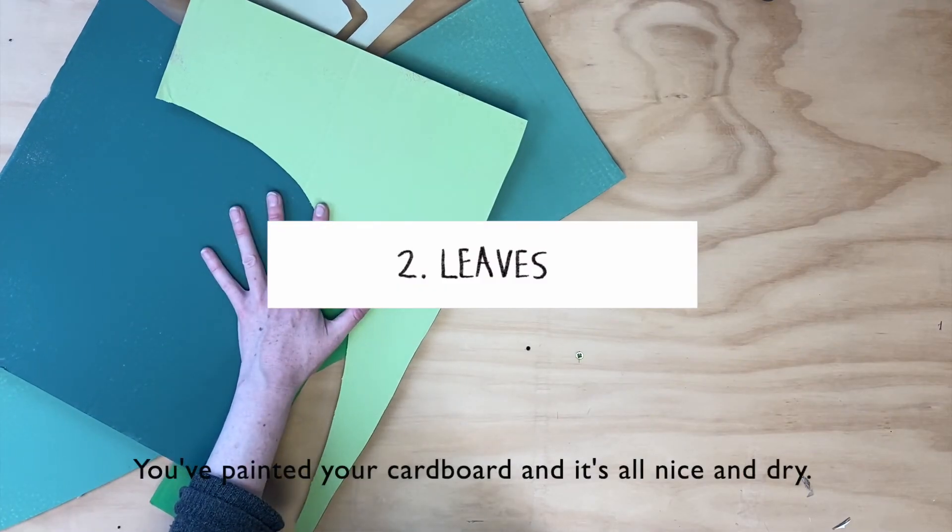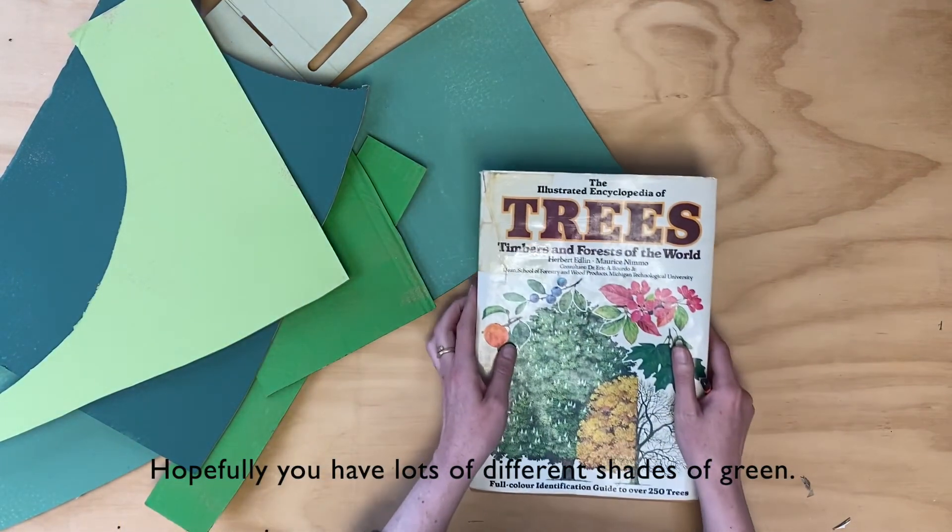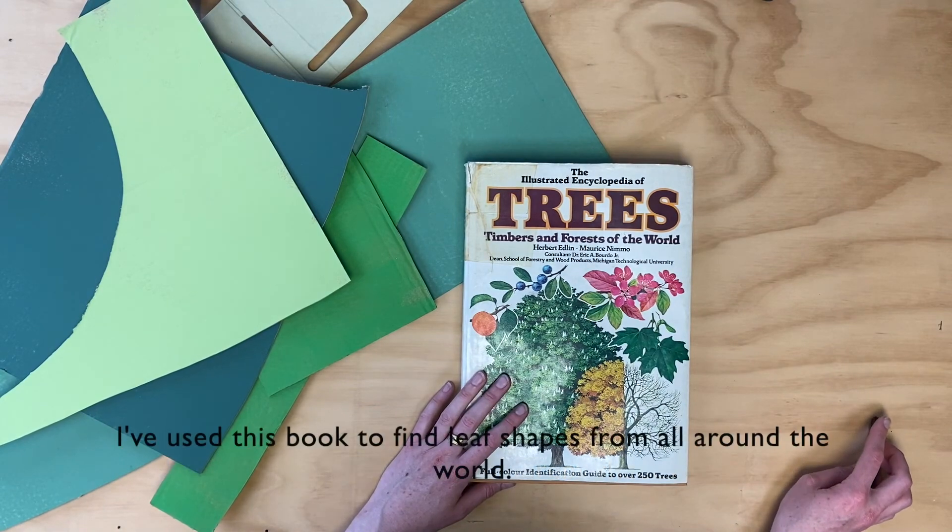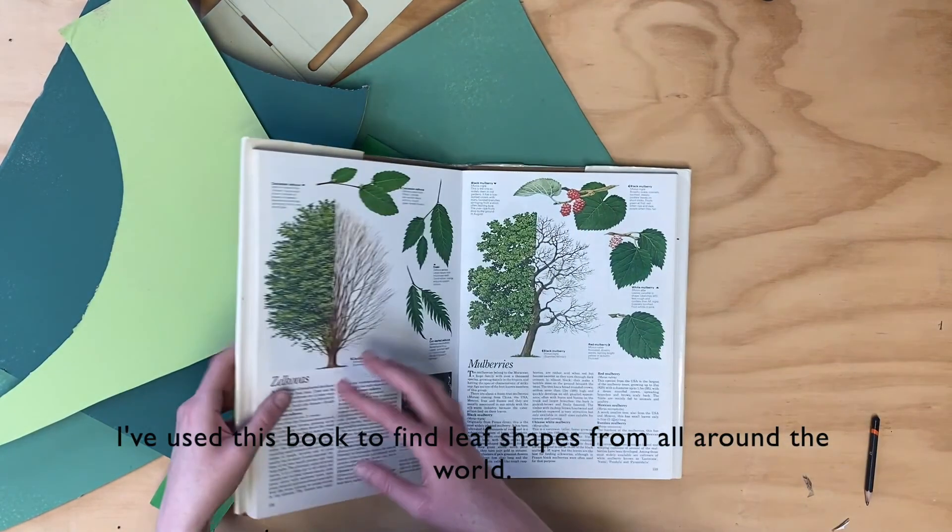So you've painted your cardboard and it's nice and dry, you've got lots of different colors of green. I use this book, so maybe you might have a book you can get out of the library to have a look at different types of leaves from all around the world. And you can see that.